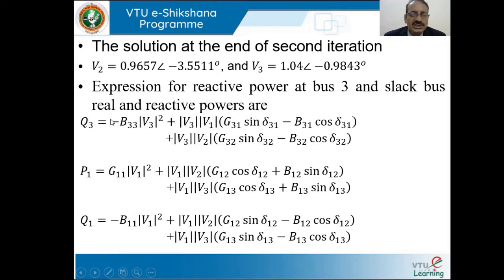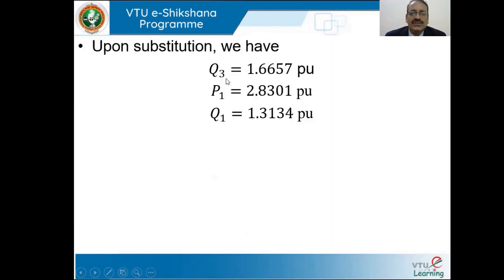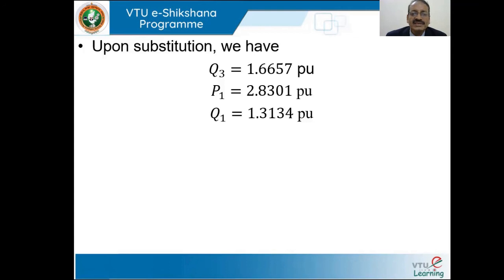Q3 is not computed during the PV bus iterations, so we calculate it now: Q3 = 1.6657 per unit. The slack bus powers are P1 = 2.8301 per unit and Q1 = 1.3134 per unit. The solution is not fully converged here — it will take one or two more iterations. Students are encouraged to continue on a similar basis until convergence is reached, or use a computer program; convergence is typically achieved within 4 to 5 iterations.